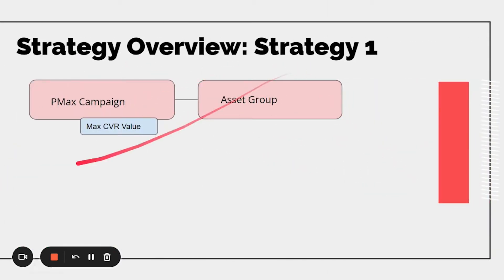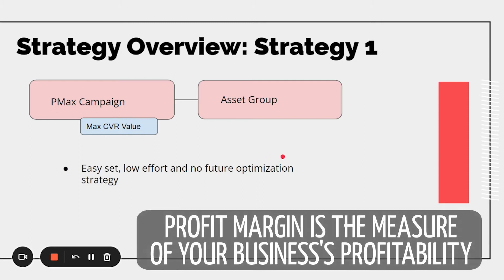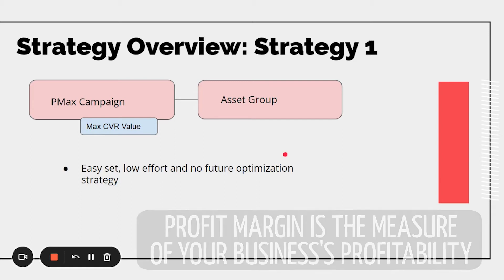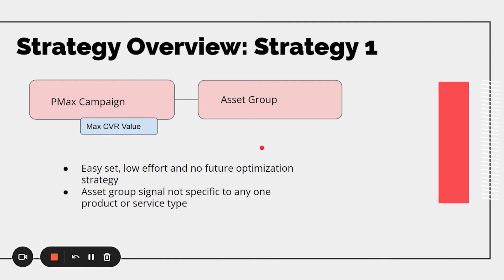Strategy number one is what most people do: a single Performance Max campaign with maximize conversion value and a single asset group. The pro is it's easy to set up with very low effort, but your products in your Shopify store aren't all the same — they don't all have the same margins, audiences, and themes. So it's going to be hard to optimize. The asset groups aren't signaling to the most specific audience, making it more expensive for Google to find your target audience. You can't specify target ROAS specific to the margins of the products you have. It's a rookie mistake and it's really hard to scale.